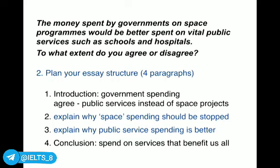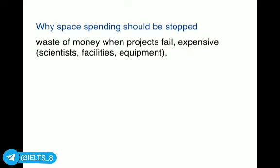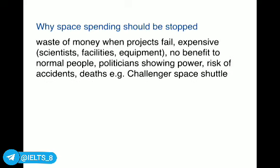The next step of planning is to plan ideas for the two main paragraphs — about six minutes, three minutes brainstorming for each one. The first main paragraph is about why space spending should be stopped. Here are some of the ideas my students gave after brainstorming: waste of money when projects fail; expensive — scientists, facilities, equipment; no benefit to normal people; politicians showing power; risk of accidents and deaths. The example they remembered was the Challenger space shuttle disaster.